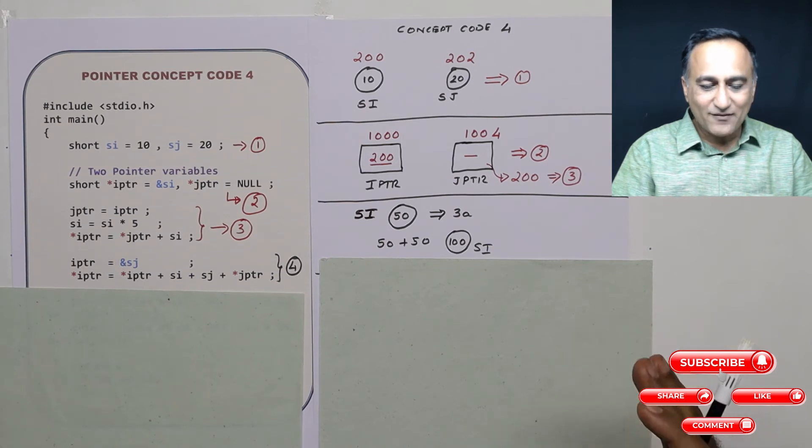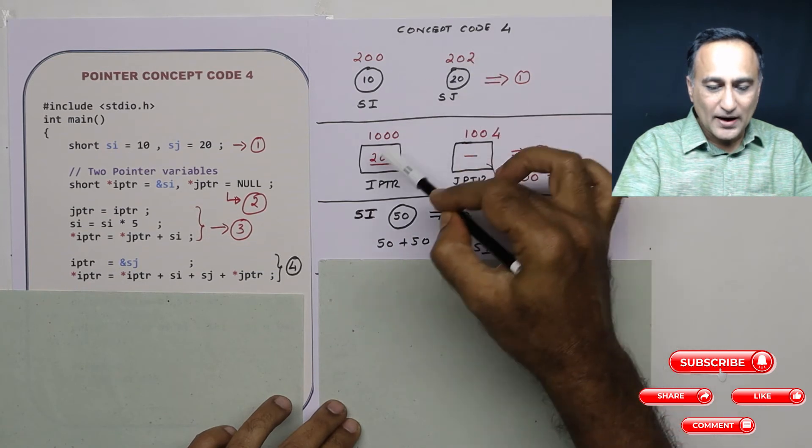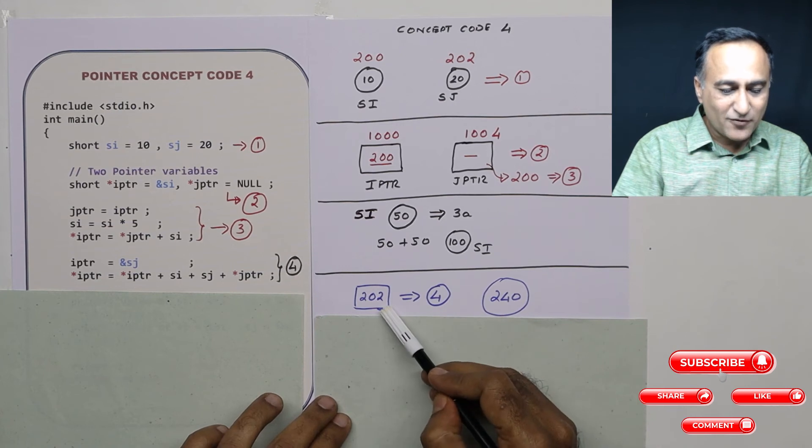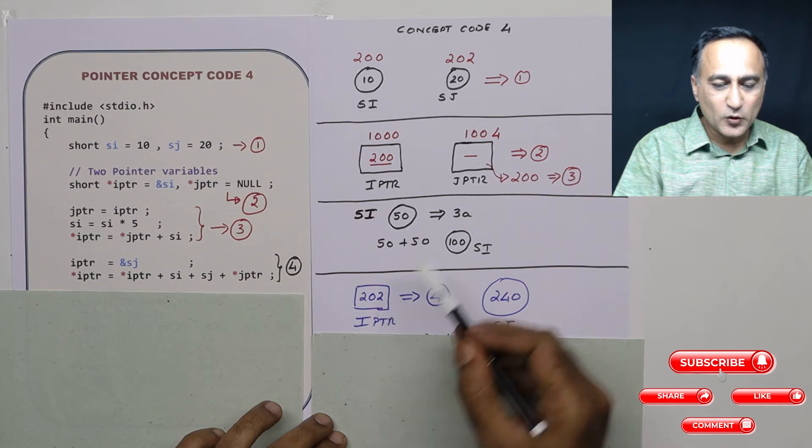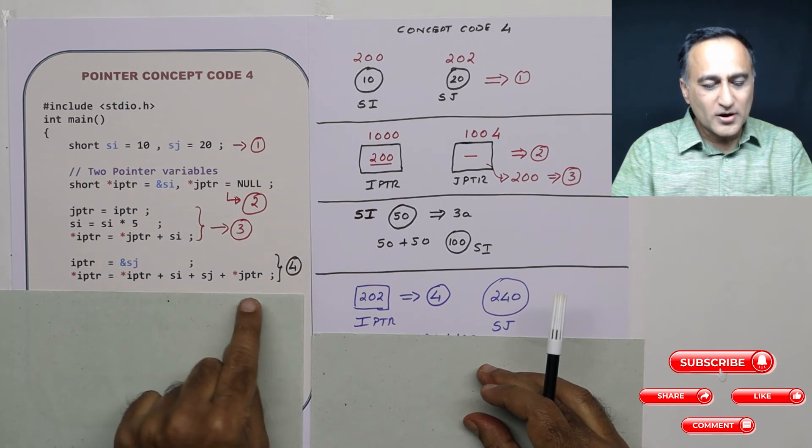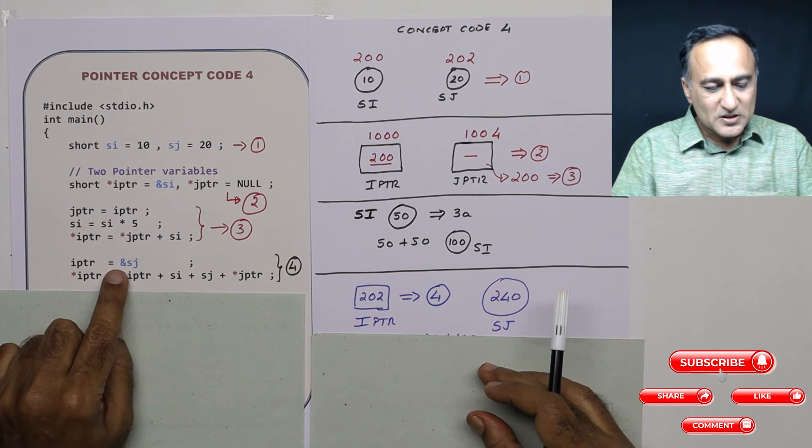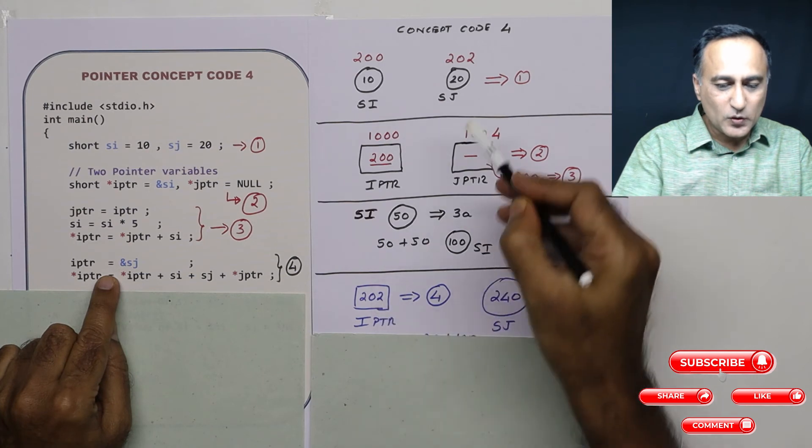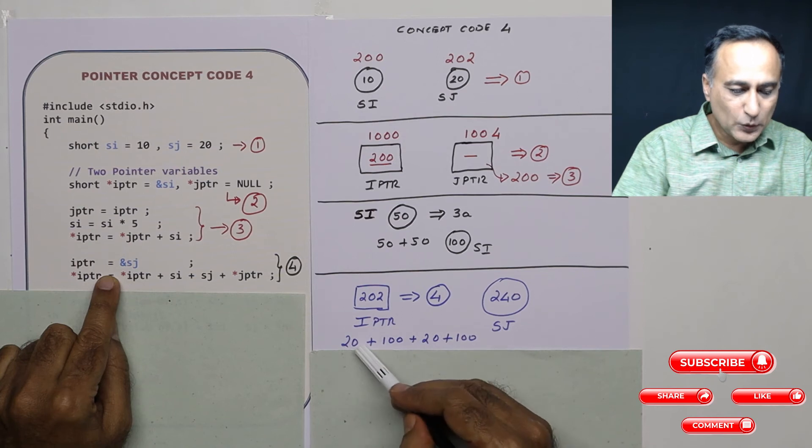In step number 4 I have done something different. I have taken the address of SJ which is 202 and given it to IPTR. So at step number 4 IPTR has taken the new address that is 202 which happens to be the address of SJ. Now look at this long calculation. It's quite simple. Nothing to really worry. Let's try to go from this. What is IPTR? It is 202. Star value at address 202 is 20. So it is first number which has to be added is 20.